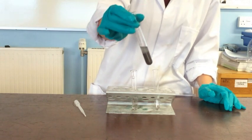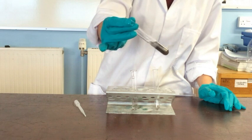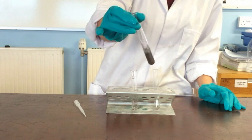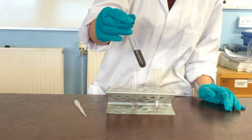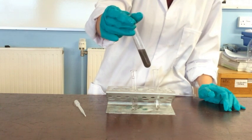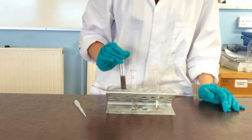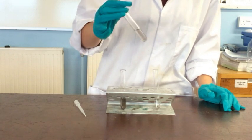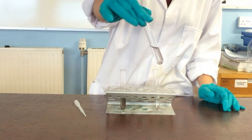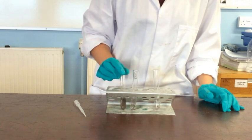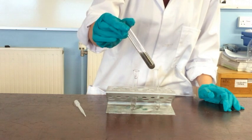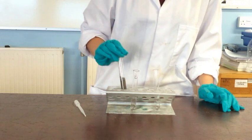Now we can see that A has reacted. It's not quite the silver mirror effect that we wanted but it's definitely a reaction. And you can see there that B hasn't reacted, that's still clear. So B is our ketone and A is our aldehyde.